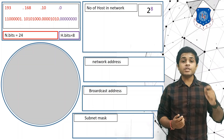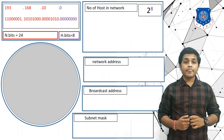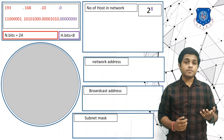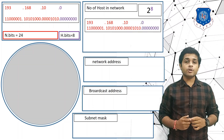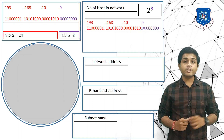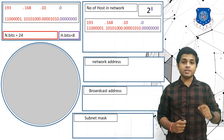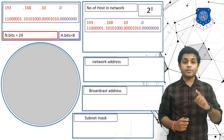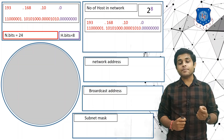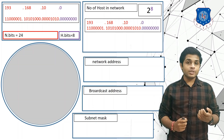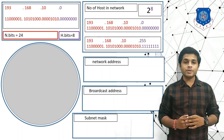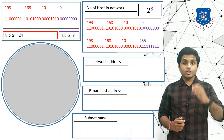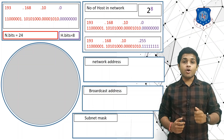To find the first IP address of this network, we set all the host bits to 0, giving us 193.168.10.0 — that is the first IP address. To find the last IP address, we set all the host bits to 1, giving us 193.168.10.255. So the range of IP addresses in this network is 193.168.10.0 to 193.168.10.255.